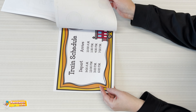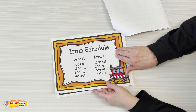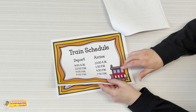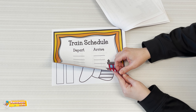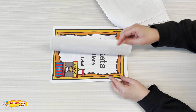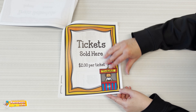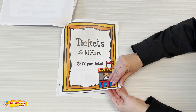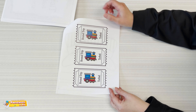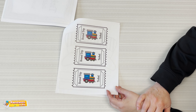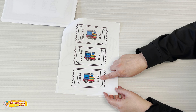Then here's the train schedule. You're welcome to change any of the times. Here's one that doesn't have any times — you can do it yourself. Here's where you're going to put up to sell your tickets. Here's the tickets that you're going to sell. You can add whatever you want to the tickets, but here's a couple.